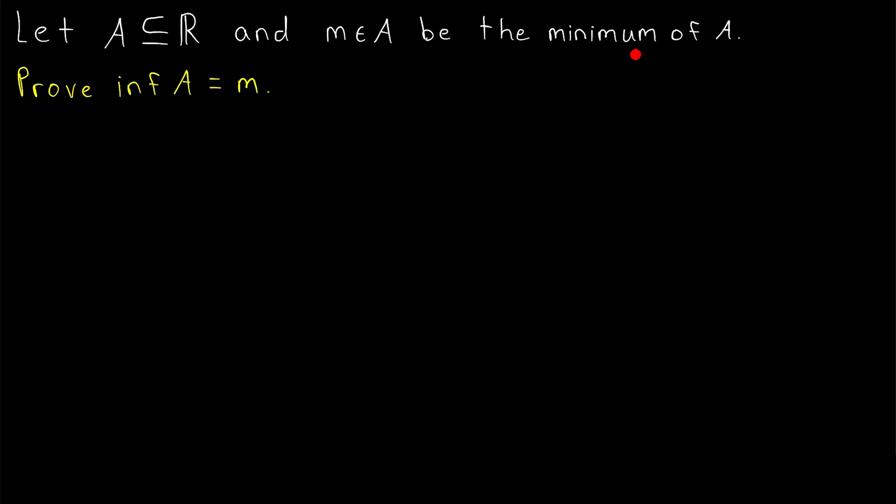So if our set of real numbers A has a minimum element called M, how can we prove that M is the infimum? Well, remember what the infimum of a set is. It's the greatest lower bound. So to prove that the minimum M is indeed the infimum of the set A, we need to show that M is a lower bound, and that no other lower bound is greater than M. That would prove that M is the greatest lower bound, and thus the infimum.